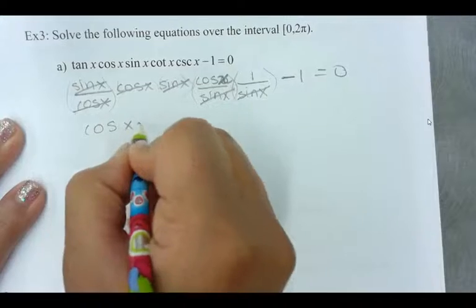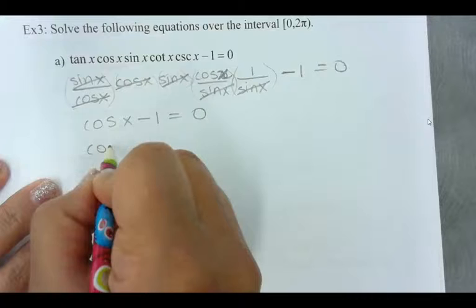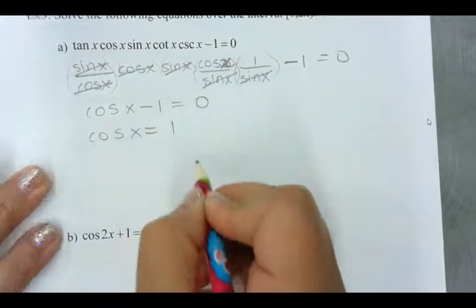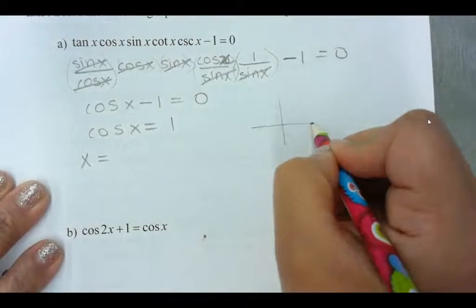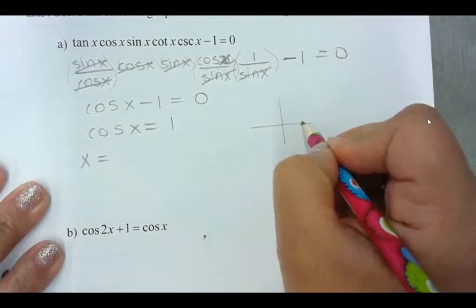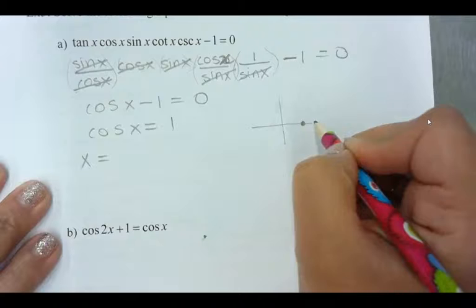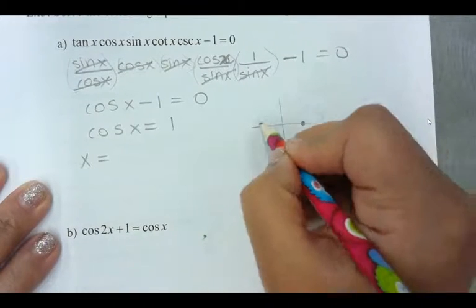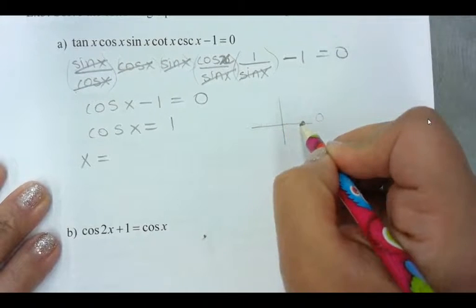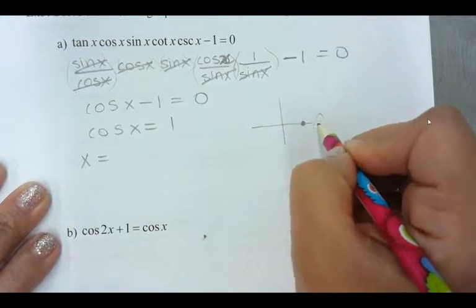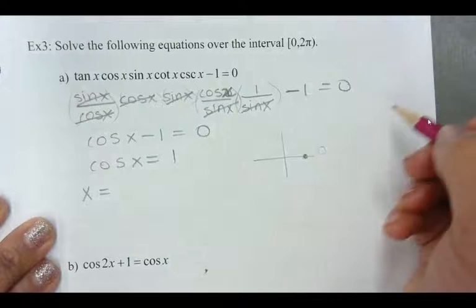Cos x minus 1 equals 0. So now cos x is equal to 1. What are the values of x that will satisfy that? If I look at my unit circle, x is equal to 1 here, so that is 0, and if I were to go around over here, it's negative 1, so I don't include that. So I'm just looking at 0, and then if I go around in a full circle, it's 2 pi. But am I allowed to include 2 pi?